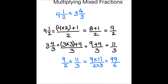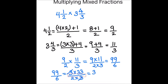Here we see that ninety-nine and six have a common factor of three. We can write ninety-nine as three times thirty-three, and six can be written as two times three. The threes cancel, and we are left with thirty-three over two.